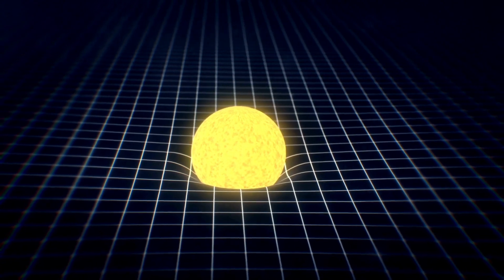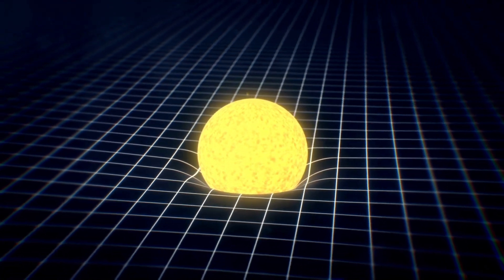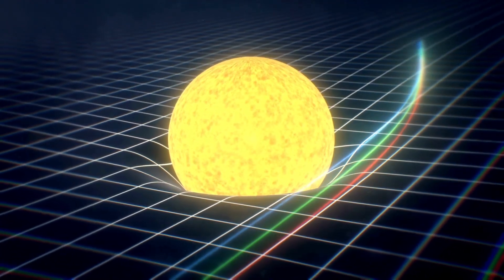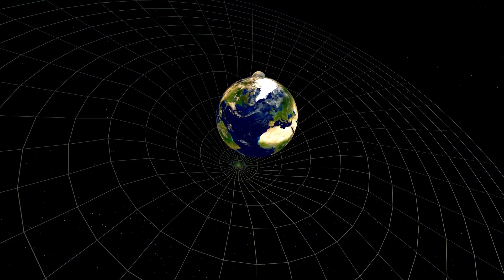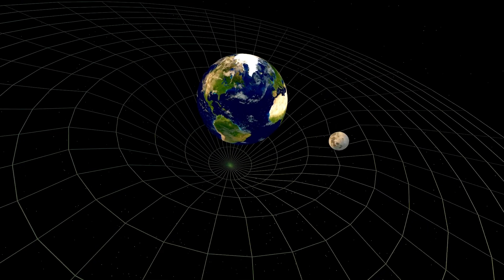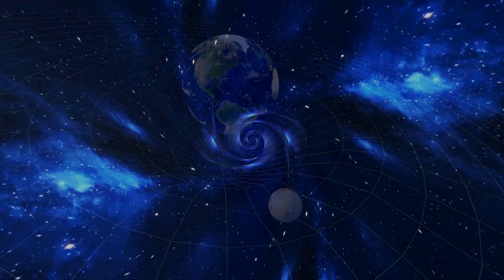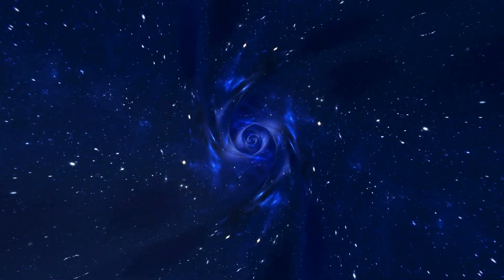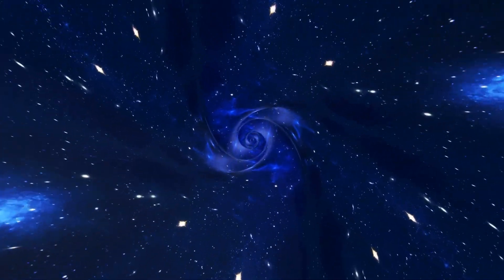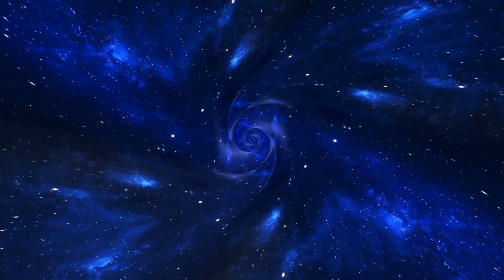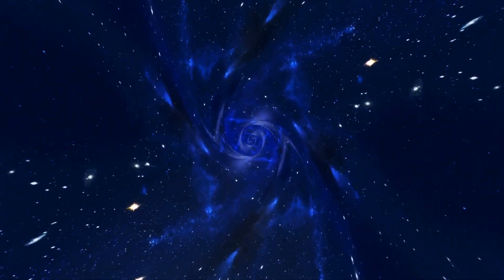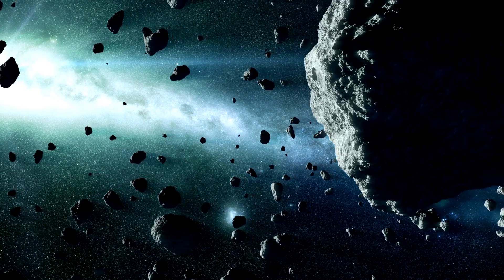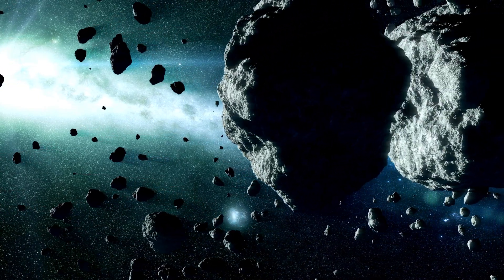Gravitational time dilation is based on the general theory of relativity and is the slowing of time caused by the gravitational pull of massive objects. According to the general theory of relativity, the force of gravity causes time and space to curve. These distortions cause time to move in different ways. Near a mass, time passes more slowly, while for a distant observer, time passes at its regular speed.